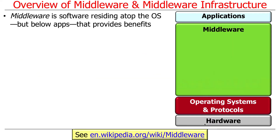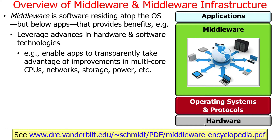What is middleware? Middleware is basically software that resides on top of the operating systems and networking protocols, which in turn reside on top of the hardware, but underneath the applications. It provides a number of benefits or capabilities to either users and/or developers. One thing it does is allow developers to leverage advances in hardware and software technologies without having to keep rewriting their apps — it's sort of an encapsulation layer.